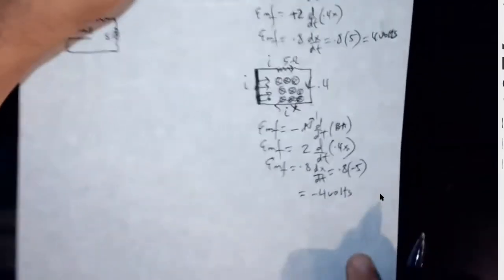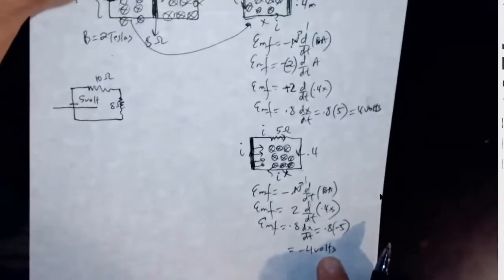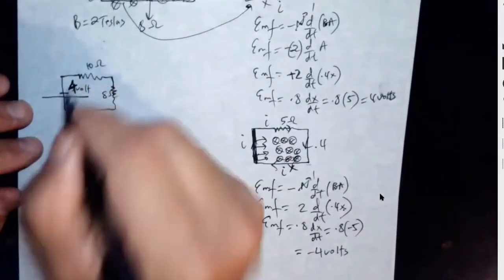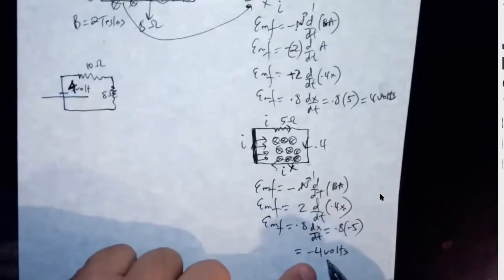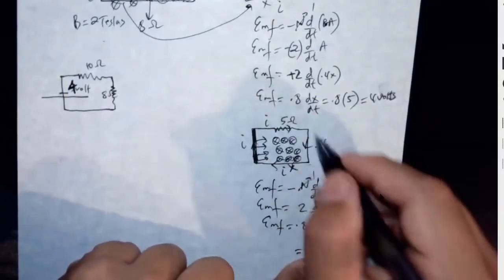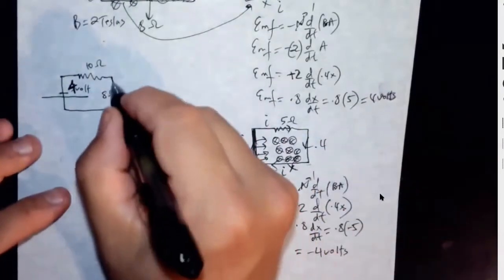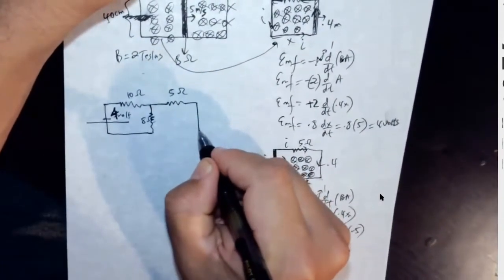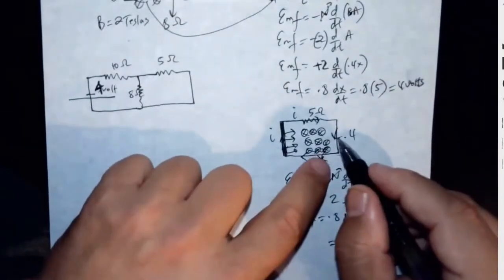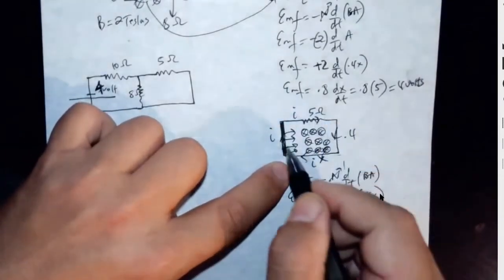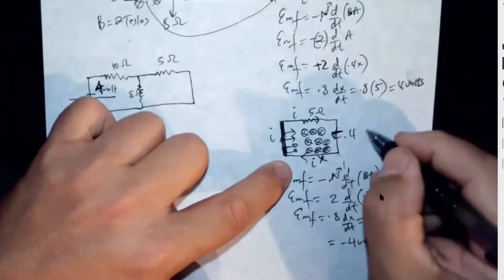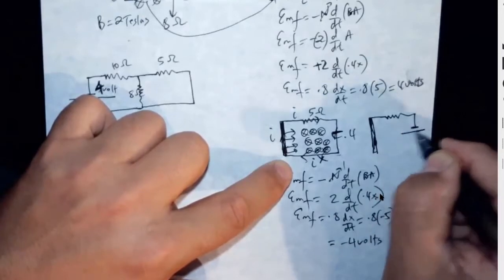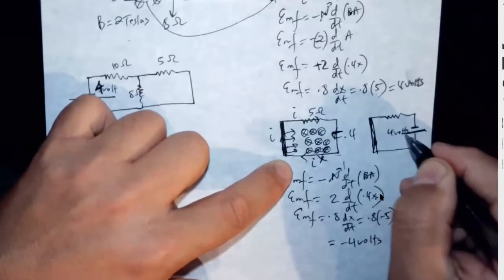So negative 4 volts — the negative means it is a clockwise current. What kind of battery can we replace that by? We have here 5 ohm. What kind of battery would push the current clockwise? It would be a battery with the negative here and the positive there, that's 4 volts, wanting to push the current this way.